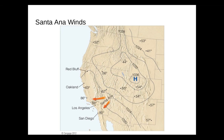Santa Ana winds are warm, dry winds that blow downhill from the deserts to the east and northeast of Southern California and into the Los Angeles Basin. Air is typically funneled through narrow mountain valleys and can be very strong — approximately 100 miles per hour. The air is very dry because it originates over the high desert. As this dries the landscape, the drying vegetation sets up the perfect condition for fires. The Santa Ana wind fuels fires and spreads them quickly.